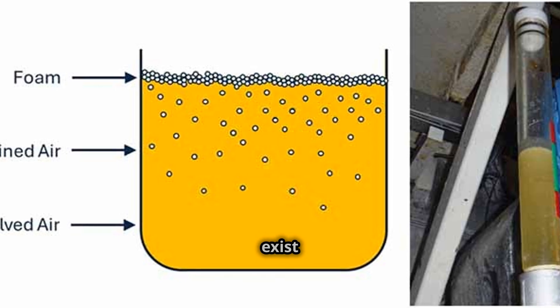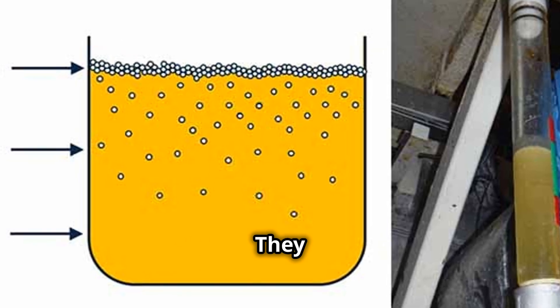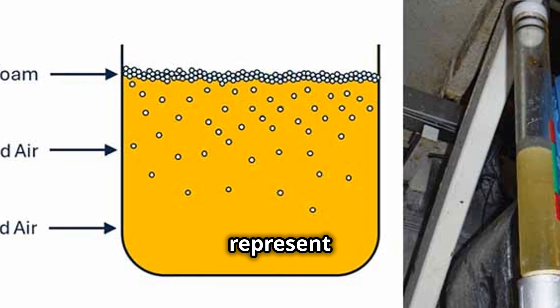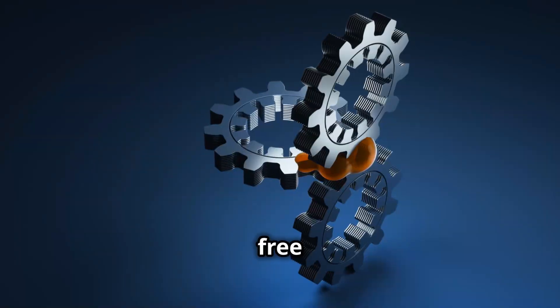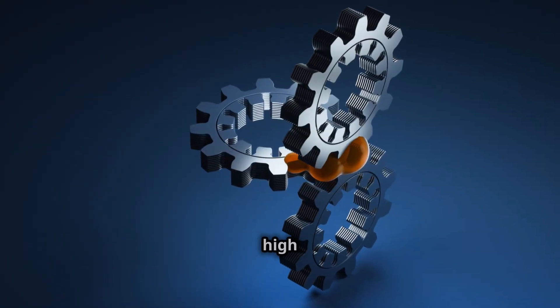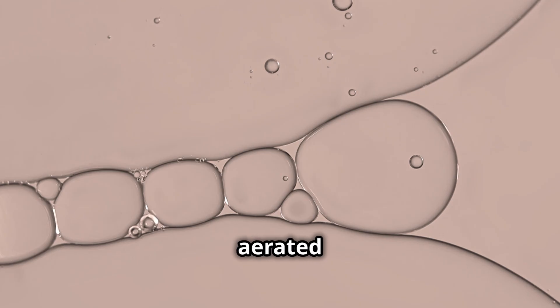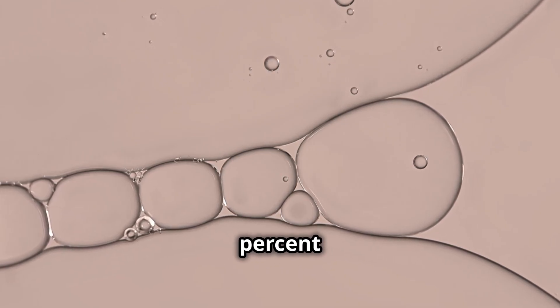Air can exist in oil in four different states of coexistence: dissolved — not visible, with no clouding present, and can represent as much as 10% of the total volume; entrained — unstable microscopic air bubbles with clouding present; free — trapped pockets of air in dead zones, high regions, and standpipes; and foam — highly aerated tank and sump fluid surfaces with more than 30% air.